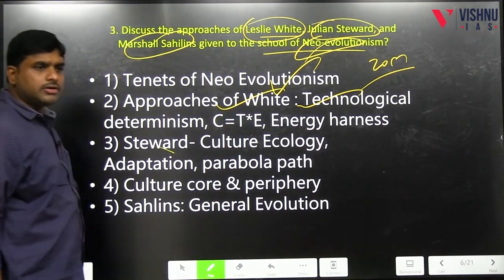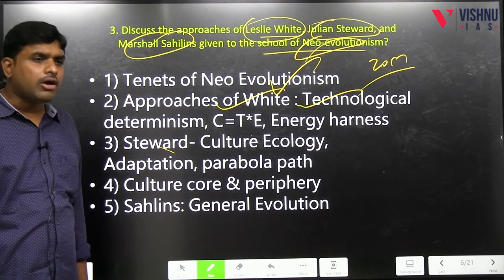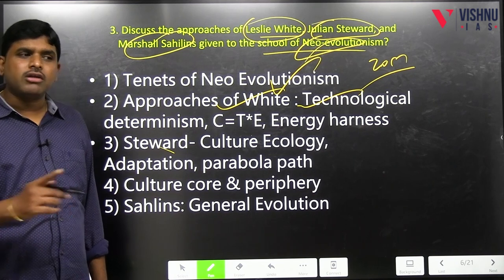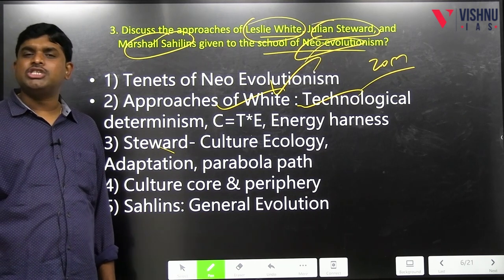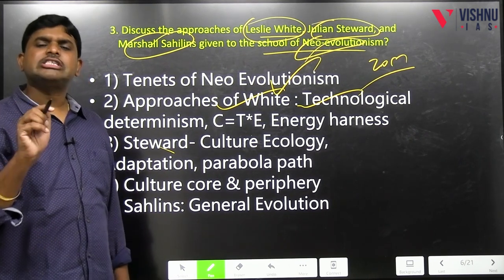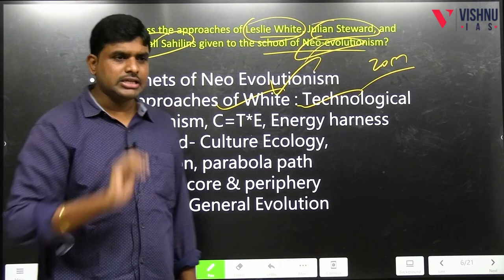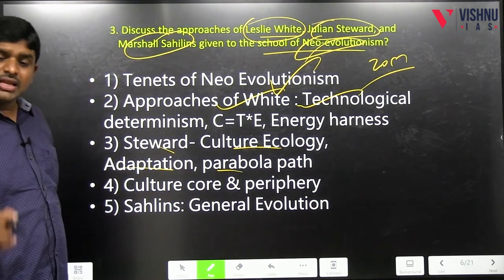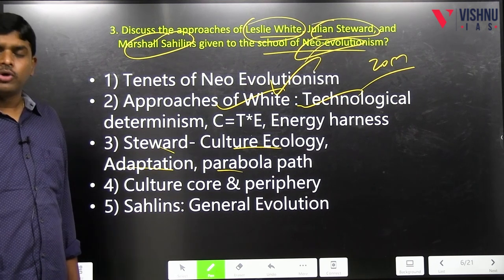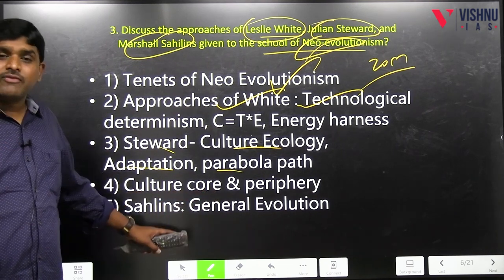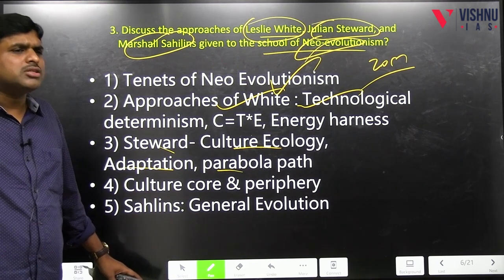Steward — Julian Steward: culture ecology. Culture is nothing but adjustment to the ecology. Adaptation to the ecology is called culture ecology. For the first time, the primacy was given to ecology; culture is nothing but an adaptive mechanism — told by Julian Steward. He was considered a practical anthropologist in neo-evolutionism. He gave a parabola form — the first form of evolution and the modified form of evolution. Three things to mention: parabola path, culture ecology, adaptation. Culture core and culture periphery — if culture cores are same, the cultures will be same: culture parallel. If culture core changes (like technology and economic systems), the peripheral elements (religion, social systems, political systems) will also change.